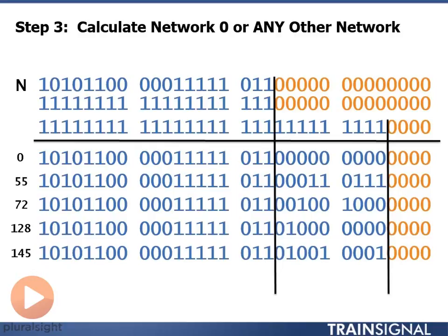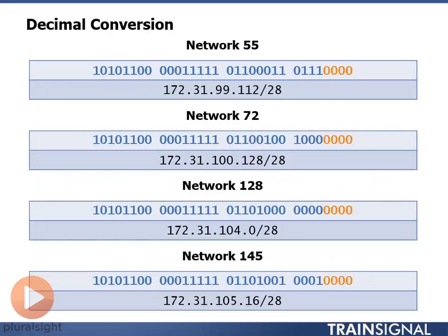We break this into 8-bit sections, convert it to decimal, and we get network 55 at 172.31.99.112/28. Network 72: 172.31.100.128/28. Network 128: 172.31.104.0/28. And last, network 145 is 172.31.105.16/28.